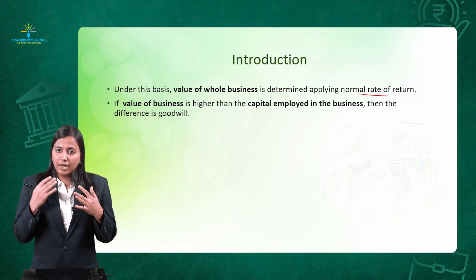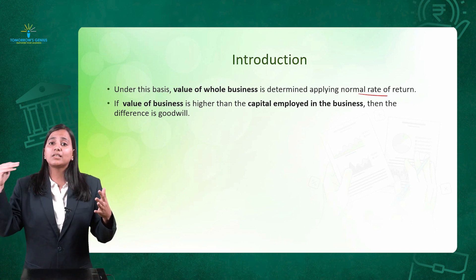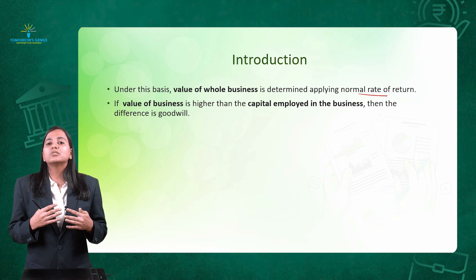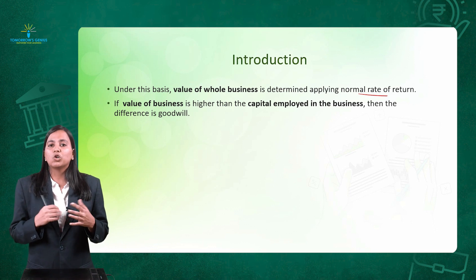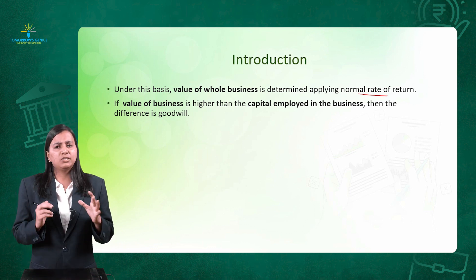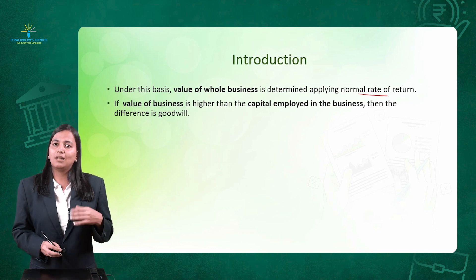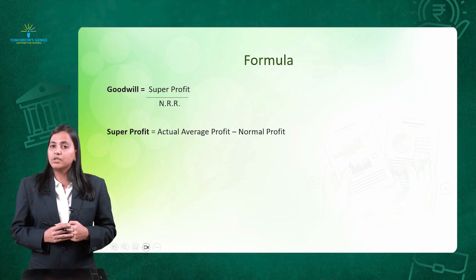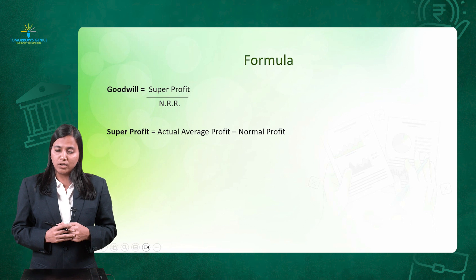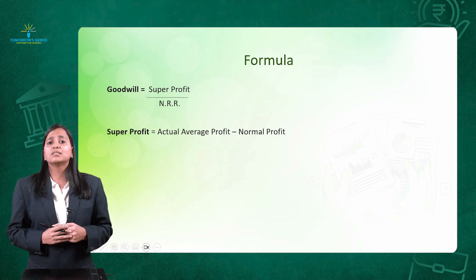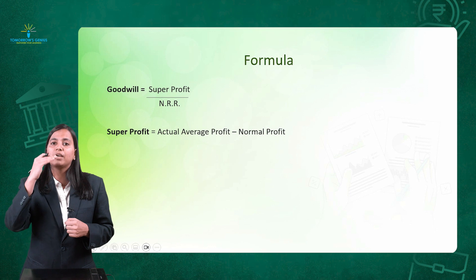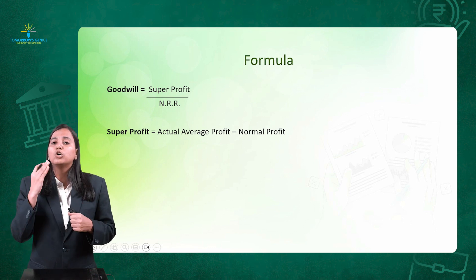If the value of the business is higher than the capital employed, the difference is called goodwill. The formula to calculate goodwill under this method is: Goodwill = Super Profit divided by NRR.